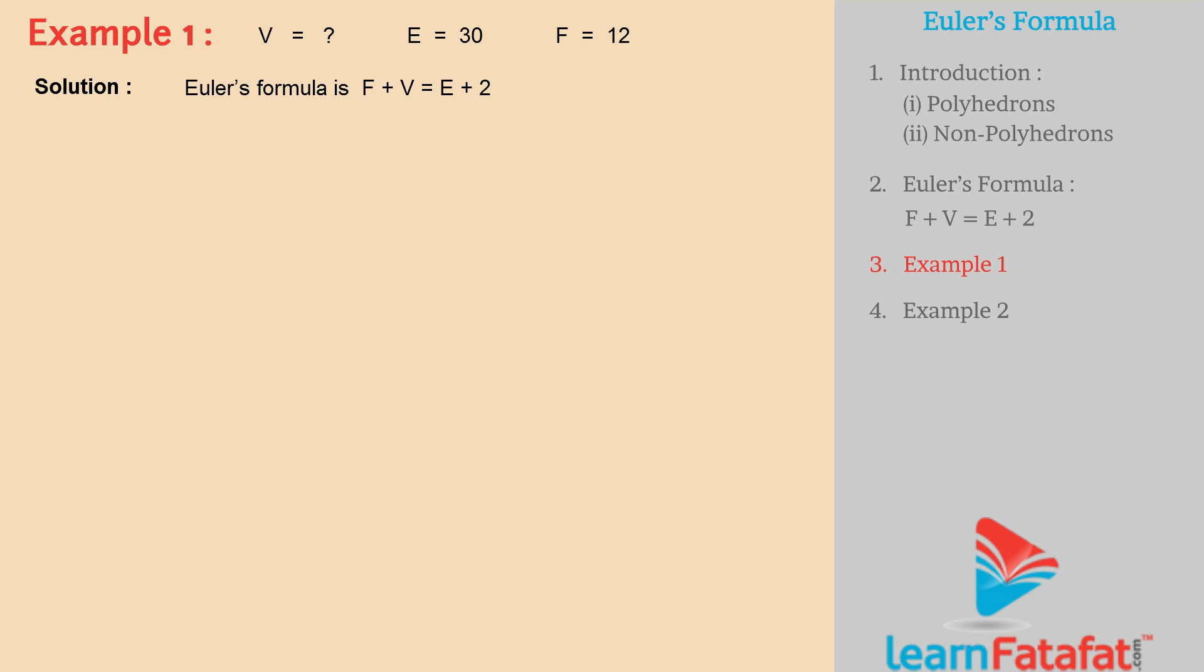Therefore V is equal to E plus 2 minus F. Therefore V is equal to 30 plus 2 minus 12. Therefore V is equal to 20.